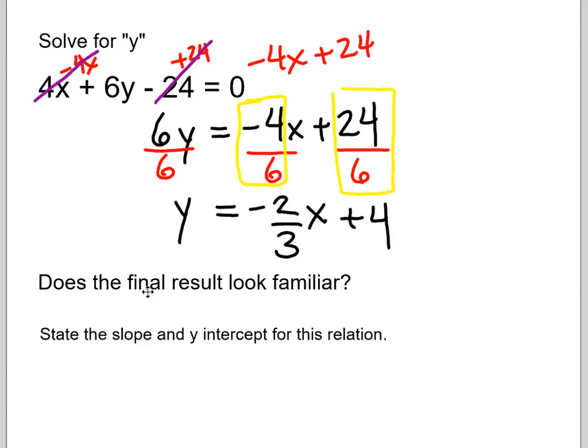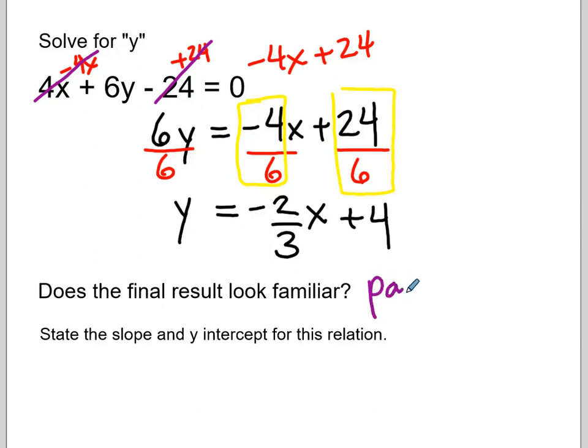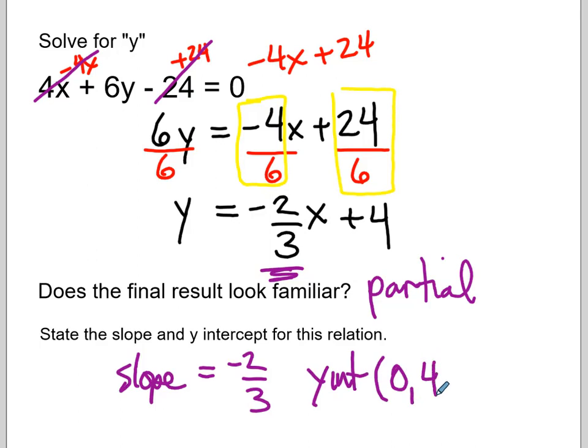Okay, so now does that result look familiar? It should. This is our partial variation again. Okay, so that's a partial. And then state the slope and y-intercept. Well, the slope, again, is the multiplier in front of the x. Okay, and the y-intercept is that trailing value 0, 4. Okay, now the key with this, and we're going to spend more time in the next few days, is for this information to be true down here, this y has to be isolated. That's the key. You can't have a number out front. You can't have any other terms on the left-hand side. This information we've been using down here is only true when the y is absolutely by itself.